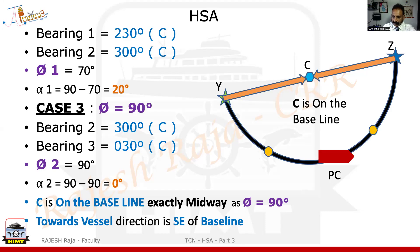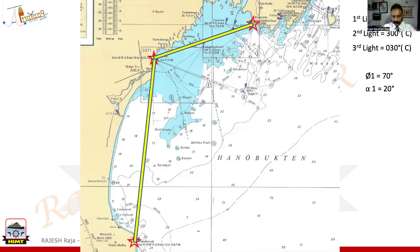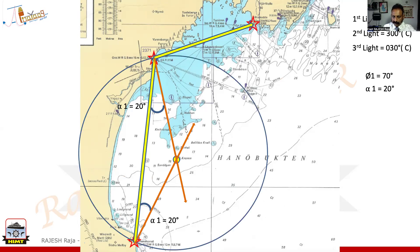Let us go back onto the same chart. The first baseline was from the bottom-left lighthouse to the central light. We had theta as 70 degrees and alpha as 20. I drew alpha towards the vessel because theta was less than 90, got Charlie, and from Charlie with X-ray I drew a position circle — the vessel is on the eastern side of this baseline. Now for case number 3, the second baseline: theta is equal to 90, so I need to figure out where the center is forming. That center is exactly on the baseline at the midpoint, so you can do a perpendicular bisector, or just measure the distance between the two lighthouses and mark the center physically.